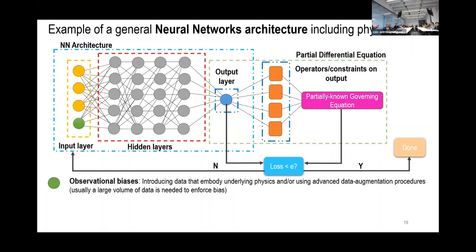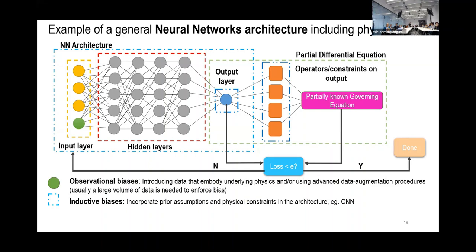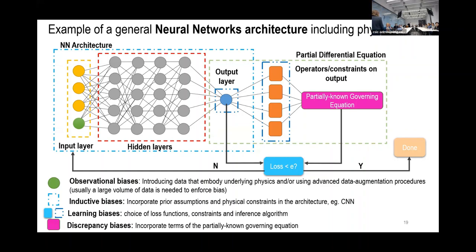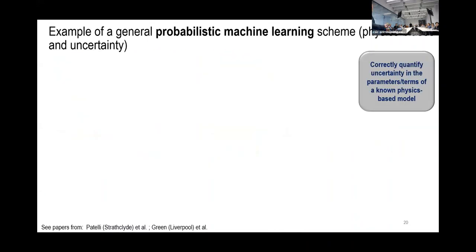Which biases did we put in? We could add physics information as observations in the input layer. We could have inductive bias in the choice of neural network architecture — for example, convolutional neural networks if the inputs are images. We have learning biases in how we choose the loss function or apply constraints. And we may have discrepancy bias because we knew about the governing equation. If we combine all of them, we can accelerate training and enhance generalization.